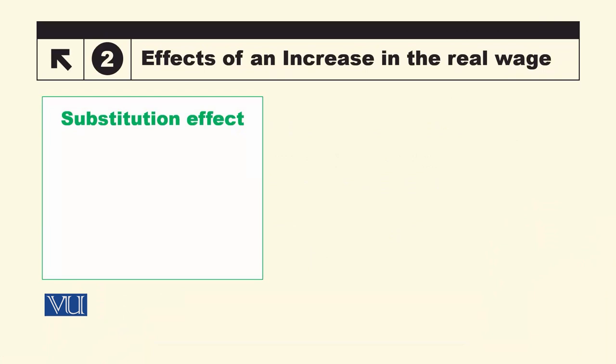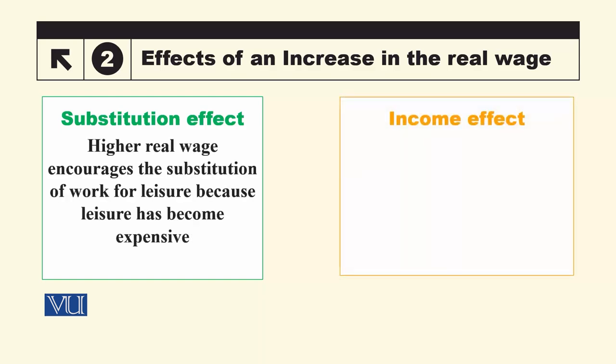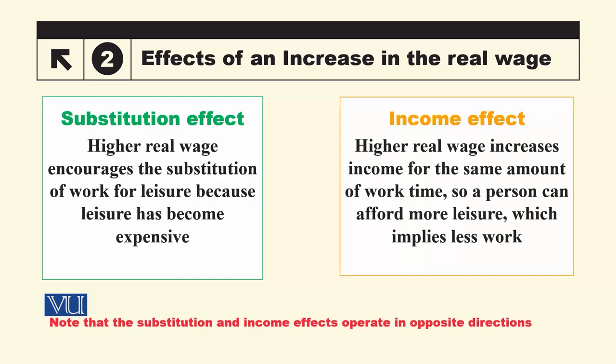The effect of real wage on labour supply can be decomposed with the help of the substitution effect and the income effect. By substitution effect, we mean that when real wage increases, it encourages more work.